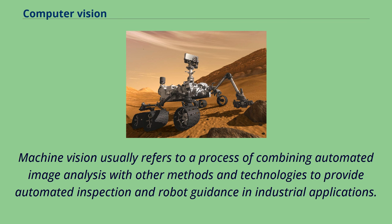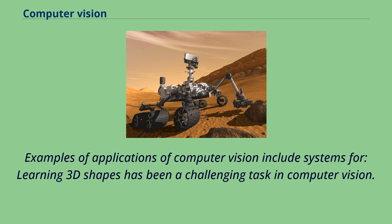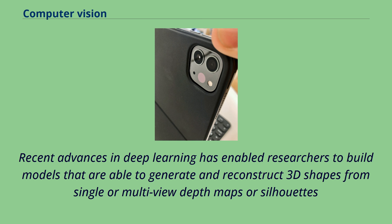In many computer vision applications, computers are pre-programmed to solve a particular task, but methods based on learning are now becoming increasingly common. Learning 3D shapes has been a challenging task in computer vision. Recent advances in deep learning have enabled researchers to build models that are able to generate and reconstruct 3D shapes from single or multi-view depth maps or silhouettes.